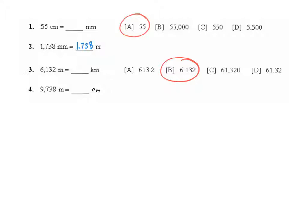To multiply by 100, I just need two empty place values at the end. So that would be 9,738 and two empty place values. That gives me 973,800 centimeters.